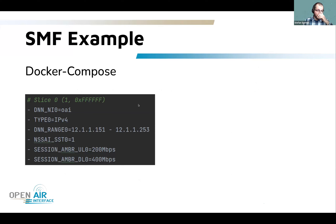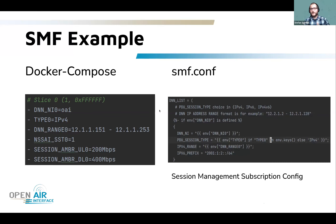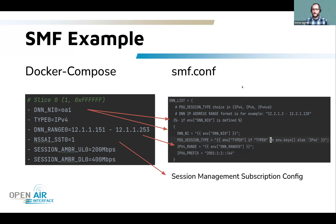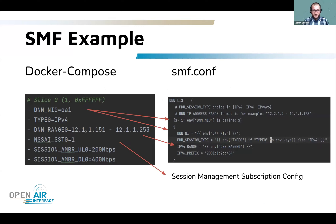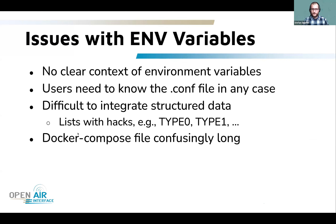The environment variables do not have a real relation to the configuration — there's no structure, just a list of names and values. We have an entry point script, so users have to rely on the automagic of the entry point script. On the left is part of a Docker Compose SMF configuration: we want to configure a DNN OEI with video session type IPv4 and an IP address range. On the right is the actual configuration inside the network function. The mapping is not obvious — the DNN goes here, the DNN range goes there. This context is missing, and the Docker Compose file gets confusingly long with hacks like appending zero, one, and so on for lists.